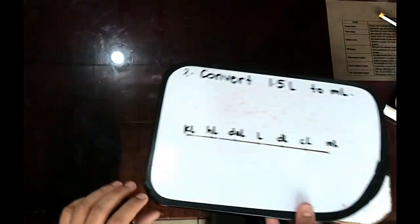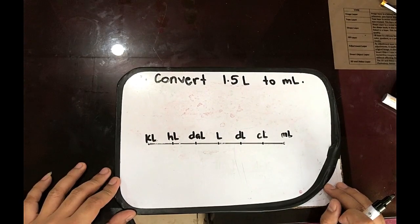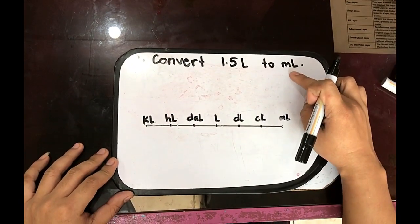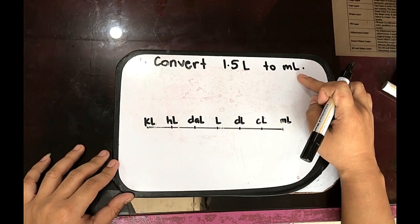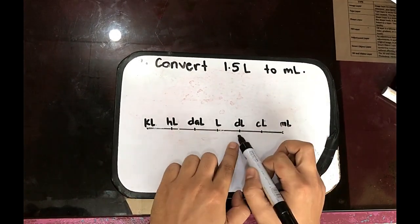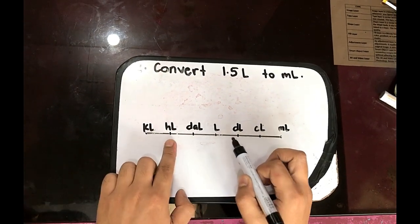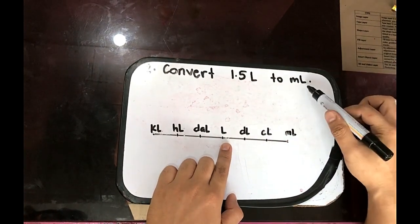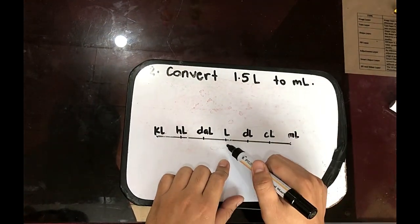Next, question number 2. Convert 1.5 liters to milliliters. So in our conversion, we have the milliliters, centiliters, deciliters, liter, decaliter, hectoliters, and kiloliters. So liter to milliliters. So how many moves?